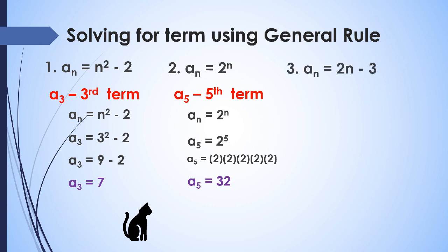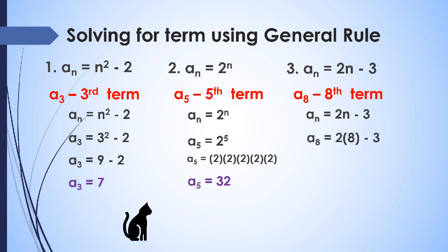For the general rule a sub n equals 2n minus 3, suppose we want to find the eighth term, a sub 8. We use the general rule, replace a sub n with a sub 8, and replace n with 8. So we have 2 times 8 minus 3, which gives 16 minus 3, so a sub 8 equals 13. The eighth term of this sequence is 13.